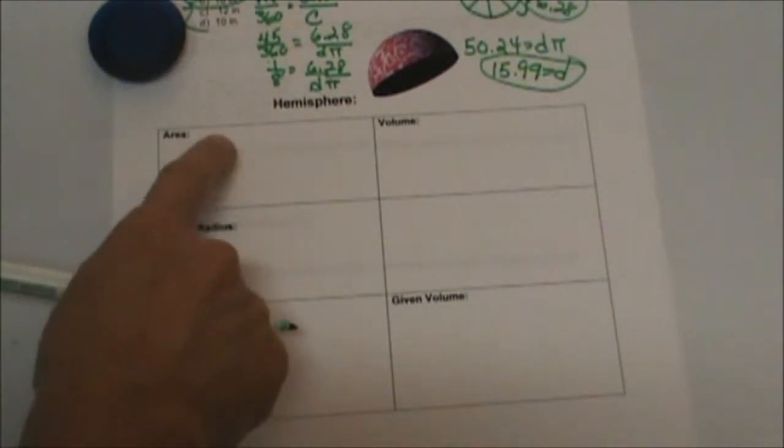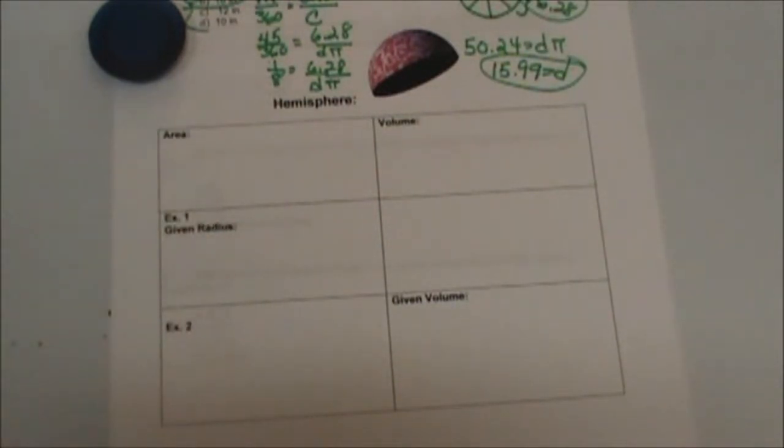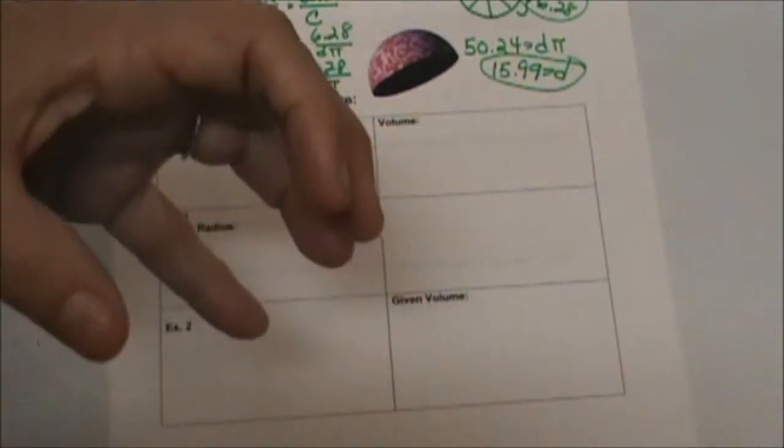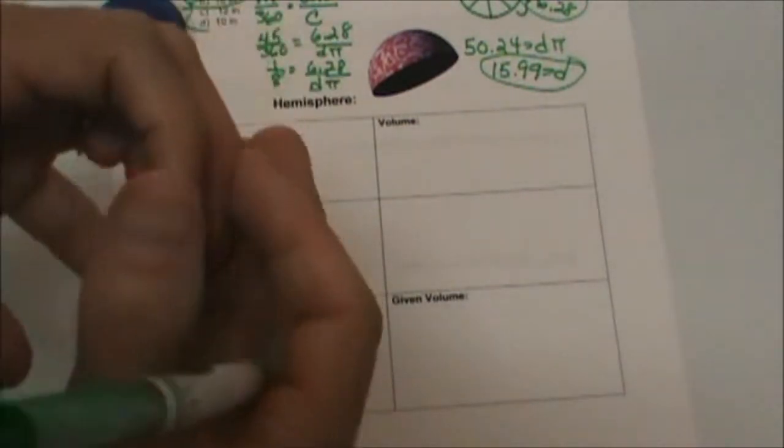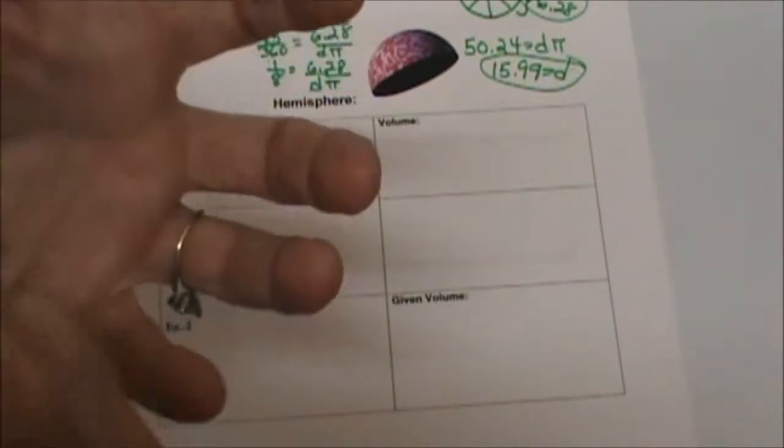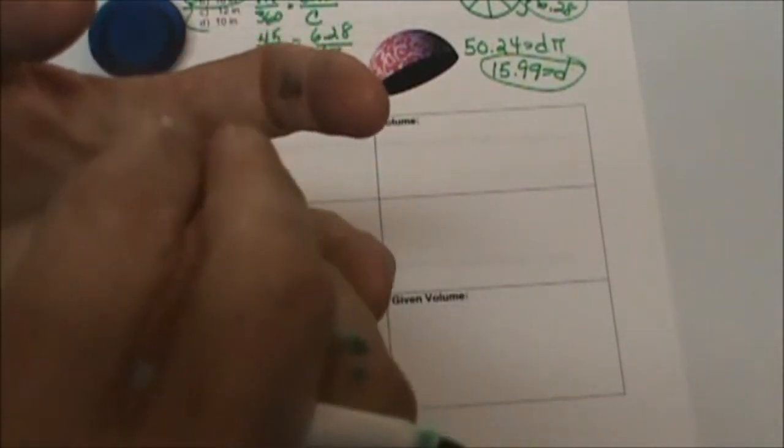To find the area of the hemisphere, I need you to think for a second. If you have half that orange, you have half of the surface area that's the skin of the orange, don't you? But don't forget, the surface area also has a flat part, the face of the orange, the juicy part.